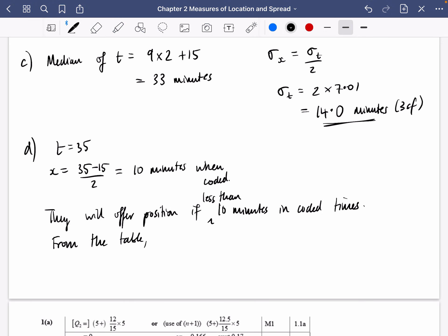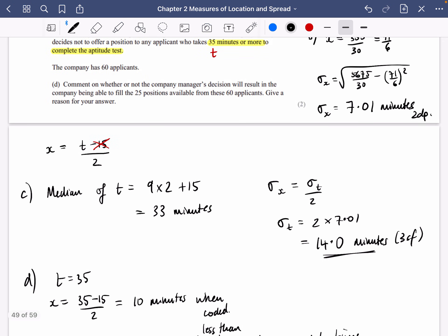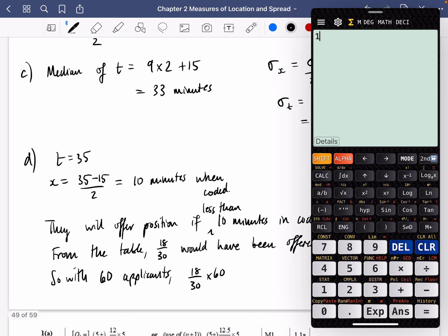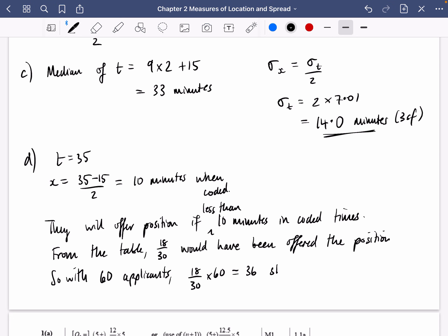So we should say from the table, 18 out of 30 would have been offered the position. But we've got 60 applicants, not 30. We've got 60 applicants. So with 60 applicants, we can do 18 over 30 times 60, which you can pretty much just do in your head because of the numbers that you've got there. It's 36. So with 60 applicants, 36 should be expected to complete in under 35 minutes and be offered a position.